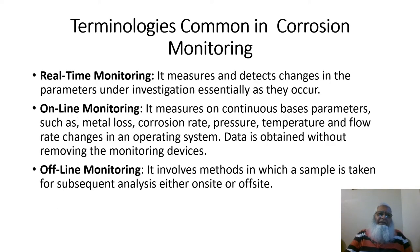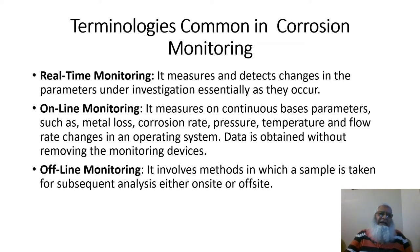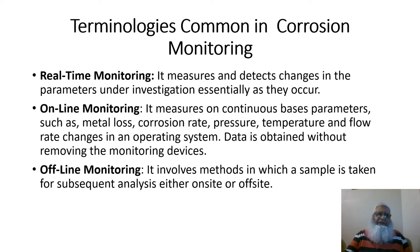Real-time monitoring measures and detects changes in parameters under investigation essentially as they occur. Online corrosion monitoring measures on a continuous basis parameters such as metal loss, corrosion rate, pressure, temperature, and flow rate changes in an operating system; data is obtained without removing the monitoring devices. Offline corrosion monitoring involves methods in which a sample is taken for subsequent analysis either on-site, off-site, or in the laboratory.